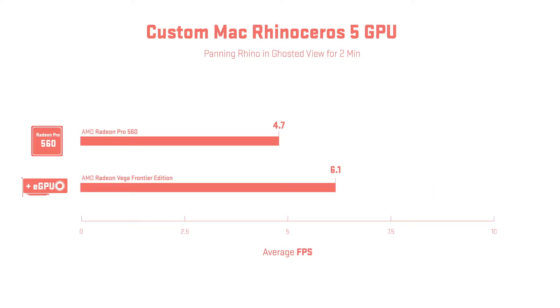For the fourth and final benchmark, I benchmarked my main modeling software, Rhino 3D. It's important to me how well that performs because it's one of the softwares I use the most. I used a frame counter on an old studio model — very large with a ton of information — in ghosted mode, which is the most difficult mode for Rhino to display. Even though the numbers don't look great, there was a noticeable gain in smoothness and overall performance in the program.